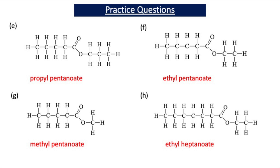So now let's name the next four esters. Ester E has a C3H7 group attached to the oxygen - that is a propyl group. The remaining part of the molecule resembles pentanoic acid, so the ester is called propyl pentanoate. Ester F has C2H5 next to the oxygen - that is an ethyl group - and the rest resembles pentanoic acid, so it is ethyl pentanoate. Ester G has a CH3 group attached to the oxygen, a methyl group, and the rest resembles pentanoic acid, so it is methyl pentanoate.